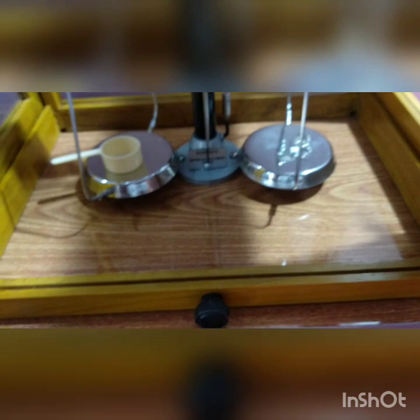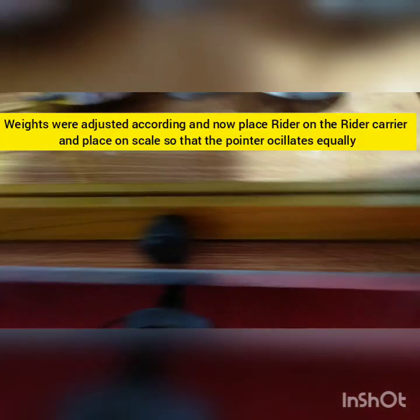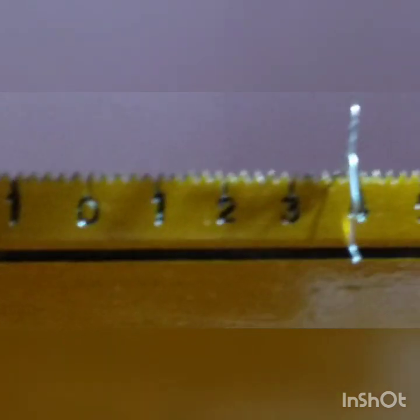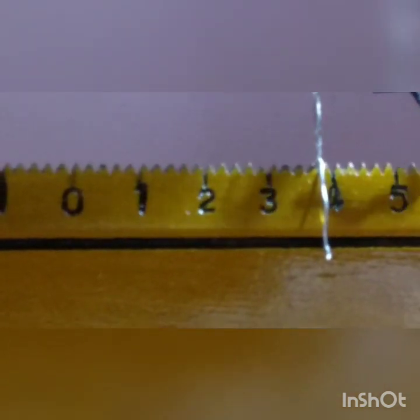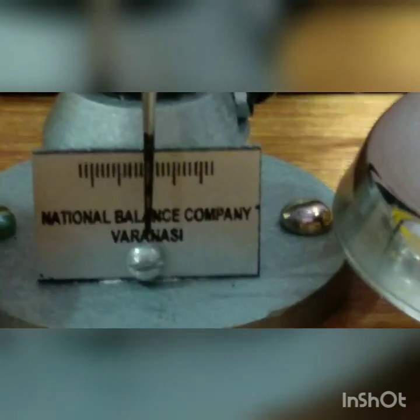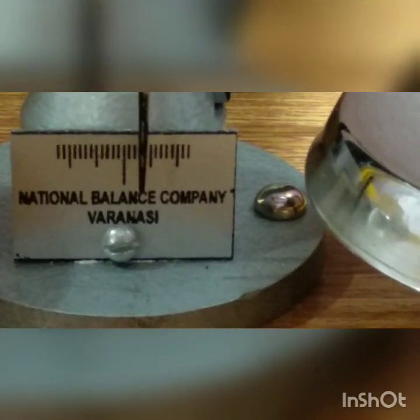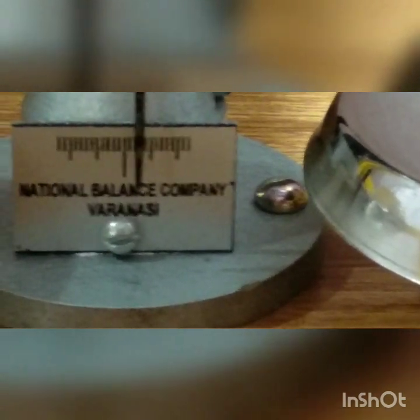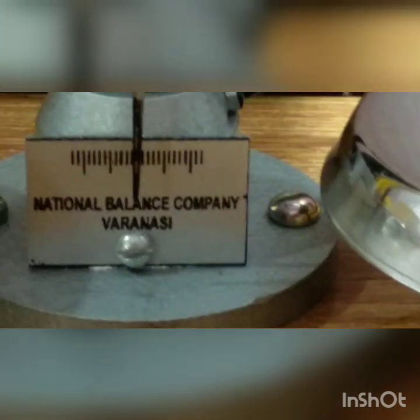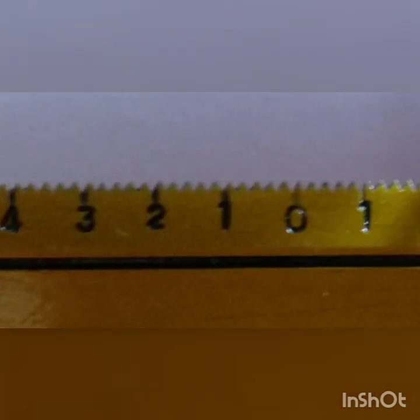Take the 10mg weight and put it here. Place it on the pan, near about 4, and then check. Now we will place the rider at 4.2.